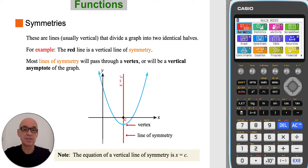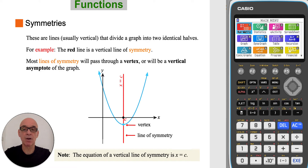Symmetries are lines, usually vertical lines, that divide a graph into two identical halves. In the diagram shown the red line is a vertical line of symmetry. Most lines of symmetry will pass through a vertex, as in the example shown, or will be a vertical asymptote of the graph. The equation of a vertical line of symmetry is x equals C, where C is the x-intercept for that line.